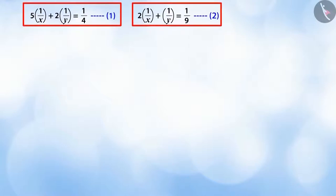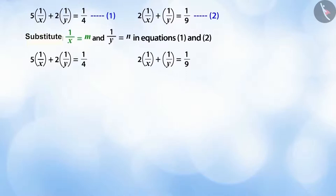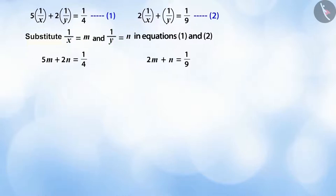So let us see how this pair of equations can be solved easily. In order to solve this type of a pair of equations, we can express them in the form of linear equations in two variables. To do this, if we replace 1/x by m and 1/y by n in equations one and two, then we get equations three and four. In this manner, we have expressed equations one and two in the form of linear equations.